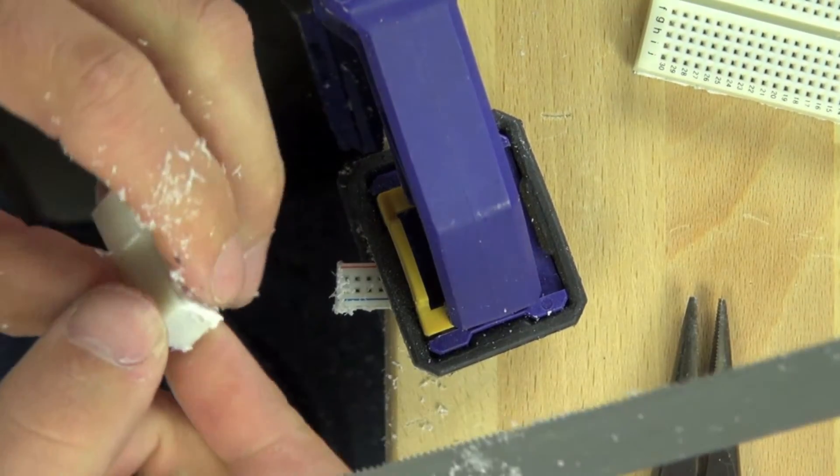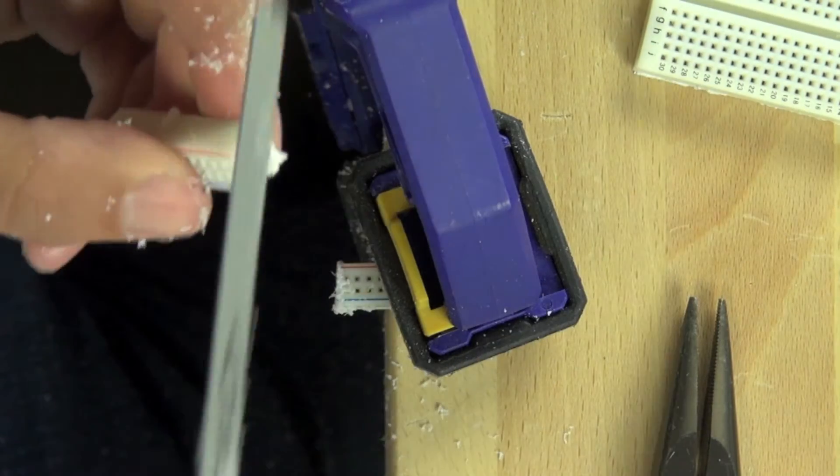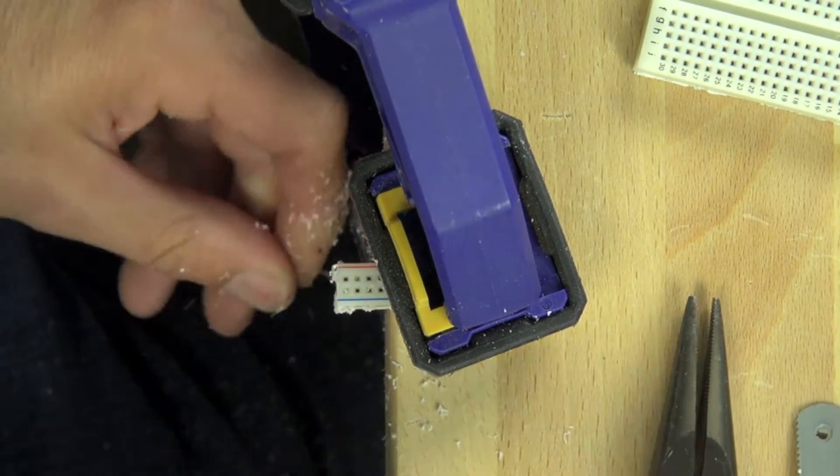Now as you cut through it, you're going to want to hold it on the bottom, because there's metal clips on the inside, and as you're pushing down with the hacksaw, they'll pop out, and you want to make sure you can cut straight through those.